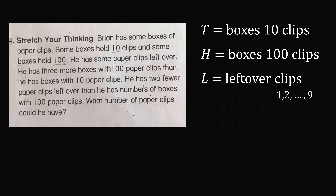Now let's continue reading the problem. He has three more boxes with 100 paper clips than he has boxes with 10 paper clips. We need to translate this into an equation. He has three more boxes with 100 clips than with 10 clips, so the number of boxes with 100 clips must be larger by three. So H must equal T plus three — this guarantees that H is always three more than T.